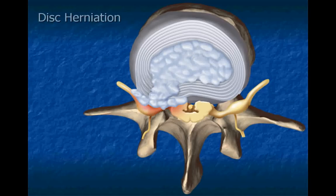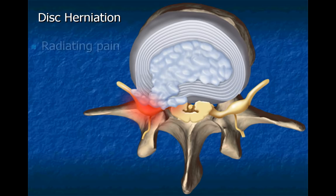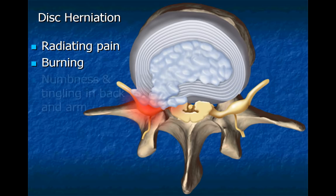This creates a disc herniation. The protruding disc material can press on a nerve root, which can result in radiating pain, burning, numbness, and tingling in the upper back and down the arm.